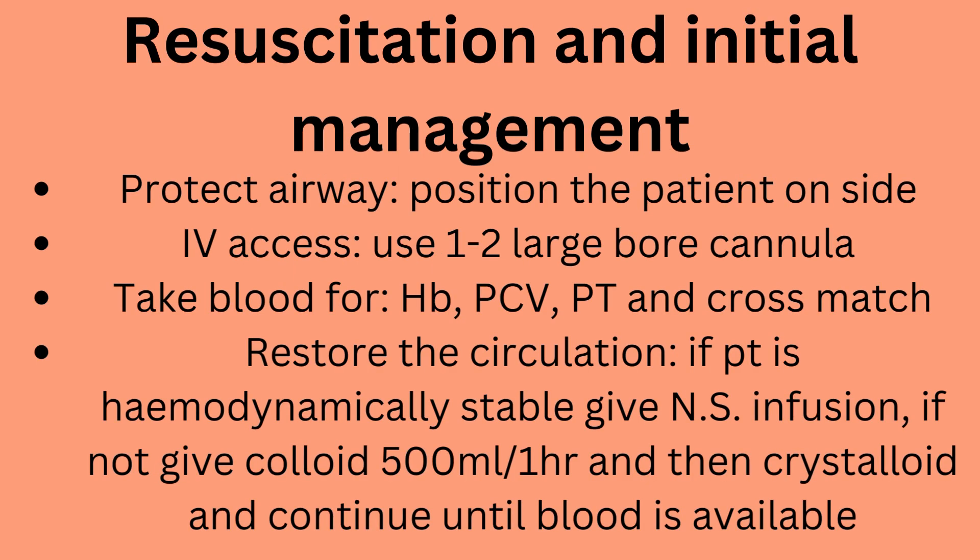Resuscitation and initial management. Protect the airway and position the patient on their side. Use 1 to 2 large-bore cannulas. Take blood for hemoglobin, PCV, PT and cross-match. To restore circulation: if the patient is hemodynamically stable give IV fluids. If not, give colloid 500 mL per hour, then crystalloid, and continue until blood is available.